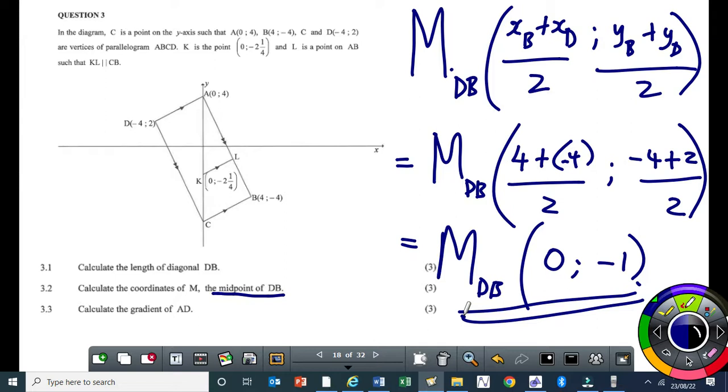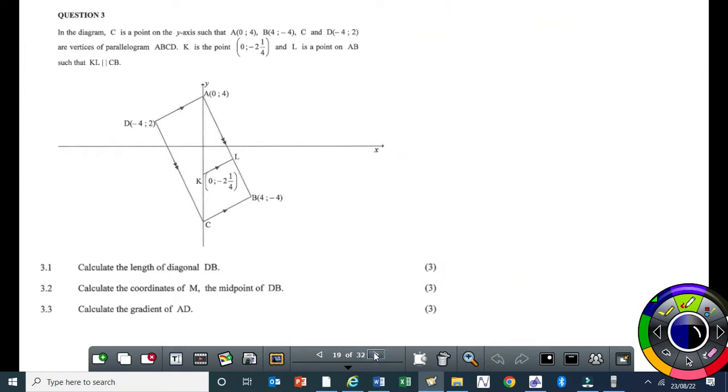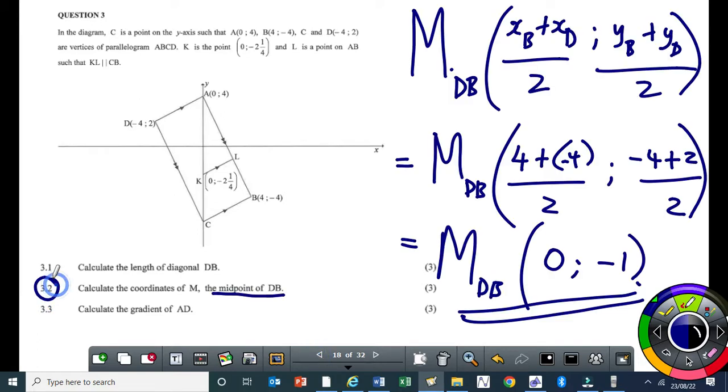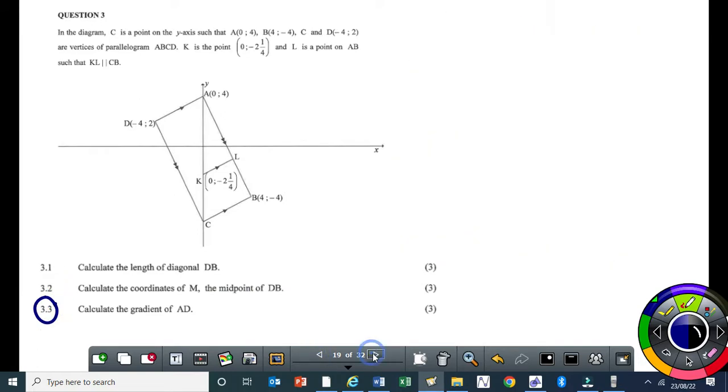Then the next one says, find the gradient of AD. That's very easy. So the gradient, we are now doing number 3.3. So 3.3, the gradient, that's grade 9. 3.3 is a grade 9 question. So the gradient of AD, so m AD, so that we get y A minus y D over x A minus x D.